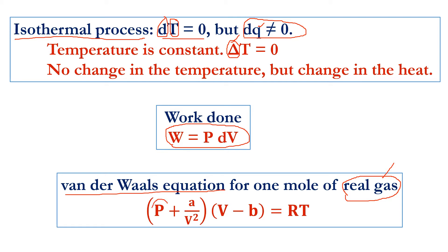Here p stands for pressure, V stands for volume, T stands for temperature, and R is the gas constant with a value of 8.314 joules per kelvin per mole. Two additional terms are added: a/V² and b, which are called correction factors. The values of a and b are Van der Waals constants — they are fixed, constant values for a given gas. Now we are going to find the work done W based on the p·dV equation for the real gas using the Van der Waals equation.